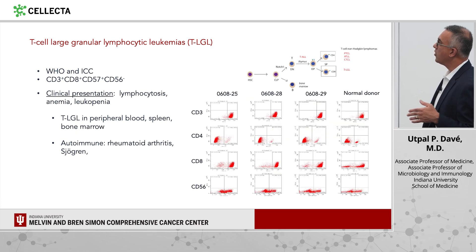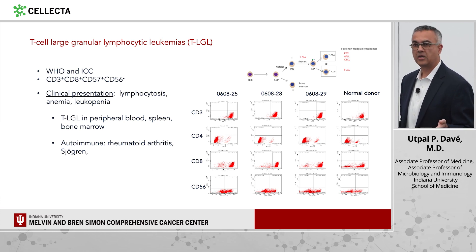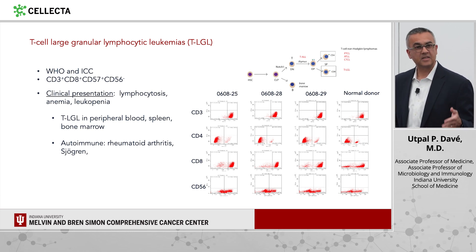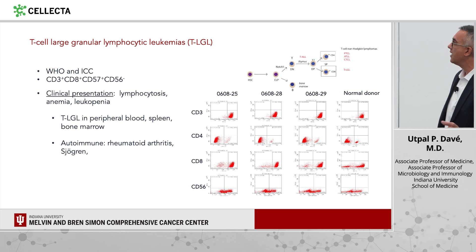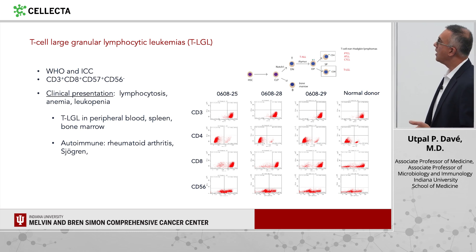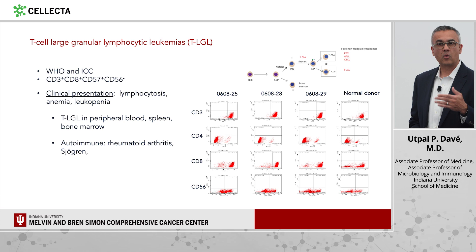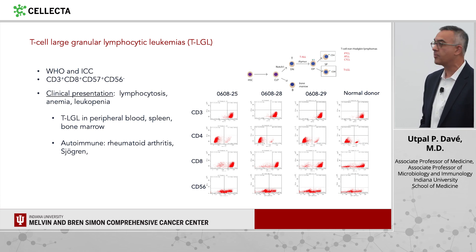We've been banking samples, and in my clinic we've been accumulating more and more of these patients through referral. We've been banking many of these cells — they've had a consistent CD8-positive phenotype as shown here. Almost all of them have required therapy at some point because of significant cytopenias.